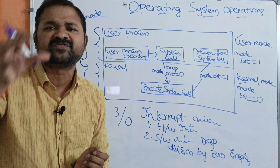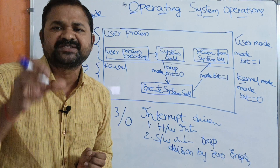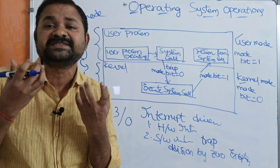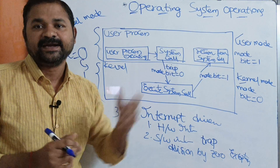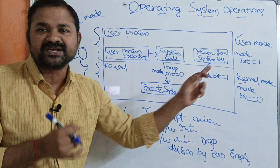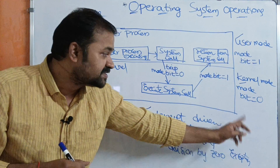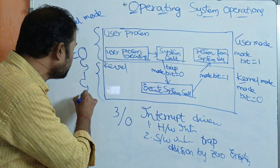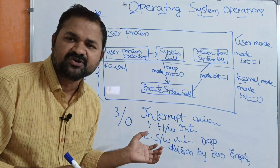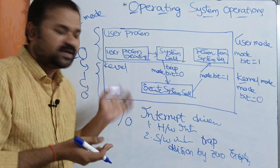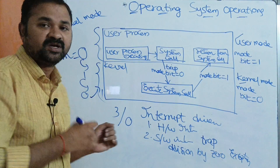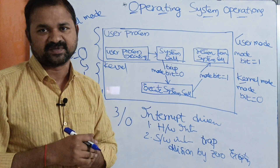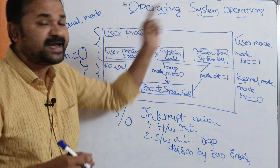Now assume the CPU receives a system call. The CPU needs to execute a system call of the process. A system call means operating system service is needed — it is a most privileged instruction that must be executed in kernel mode. So the mode bit changes from one to zero. Once the system call execution is over, the mode bit changes again from zero to one, and the CPU starts executing the remaining instructions of the user process.